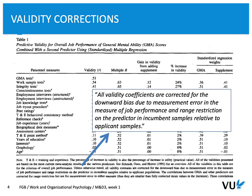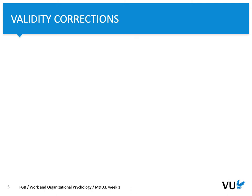This table also from this article indicates an additional correction. Let's take a look at this another correction that can be made. This correction is called correction for restriction of range.